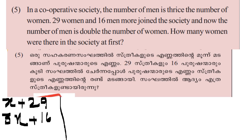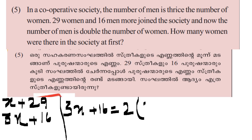After joining, the number of men becomes 3x plus 16 and the number of women becomes x plus 29. The men are now double the number of women: 3x plus 16 equals 2 into x plus 29.